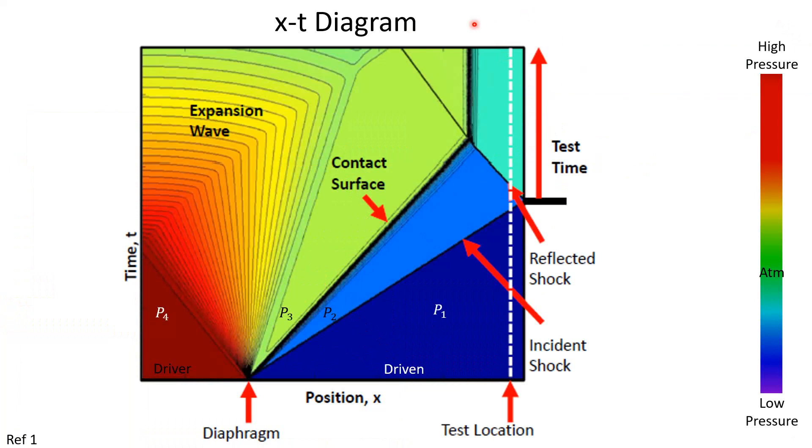I would point out that this test time here that they've achieved is kind of weird. The fact that you maintain this P5 for a really long time is not normal. I think what they did there is they either used a tailored driver gas or a driver section insert, both of which are topics for future conversation. But this is not normally what the test time looks like. Usually that contact surface continues moving in here and you've only got a very brief test time. And we'll actually see that here on an XT diagram in just a minute.